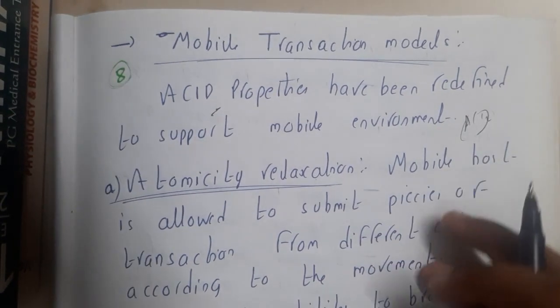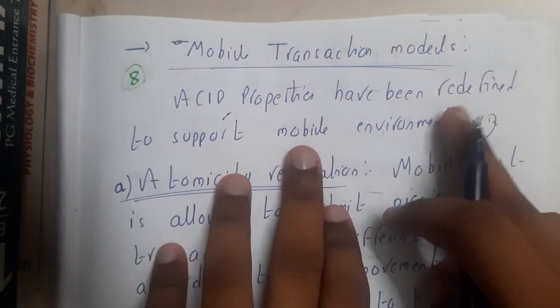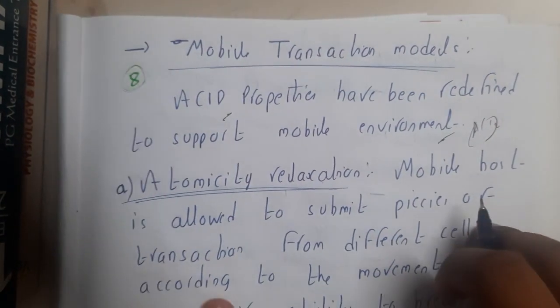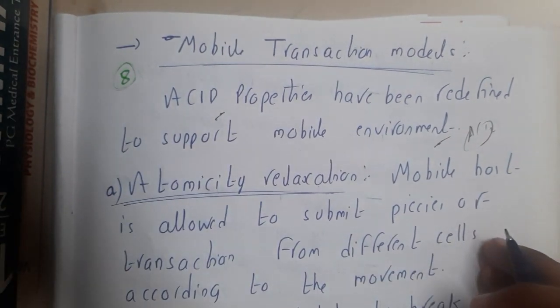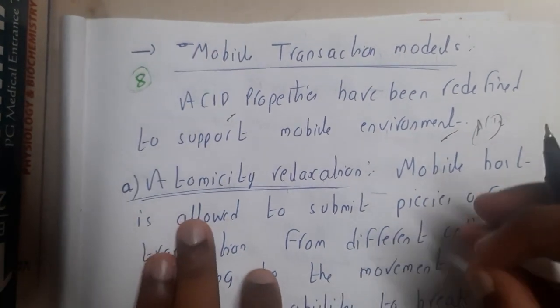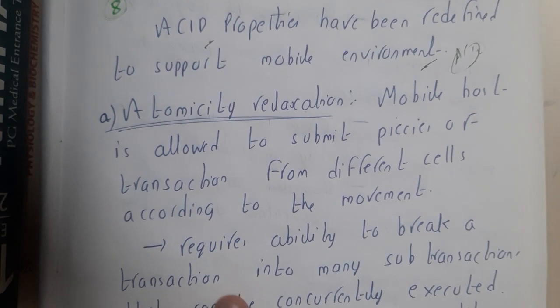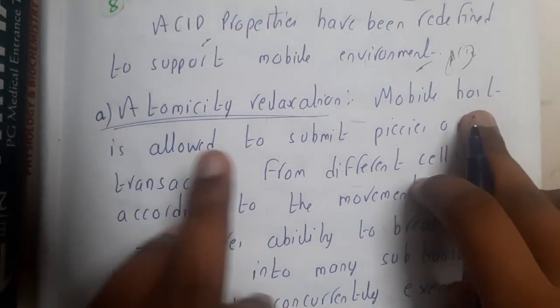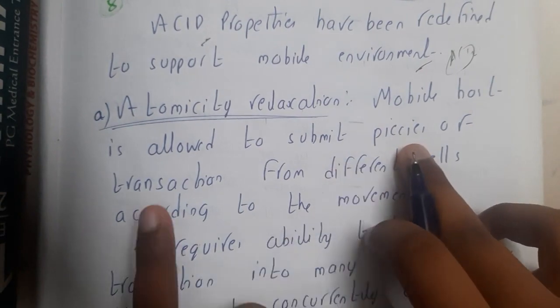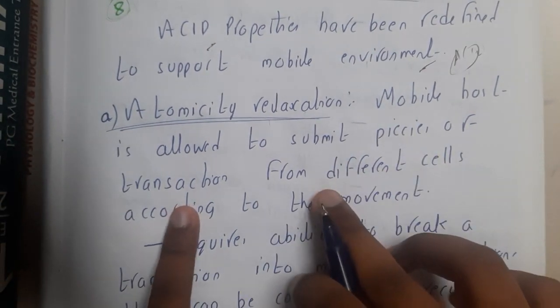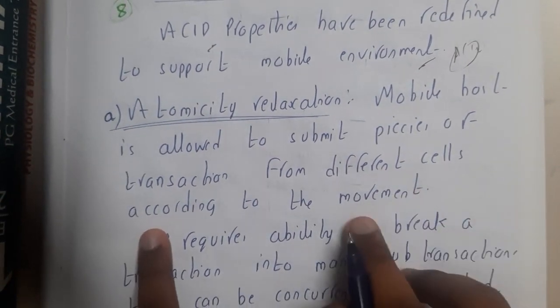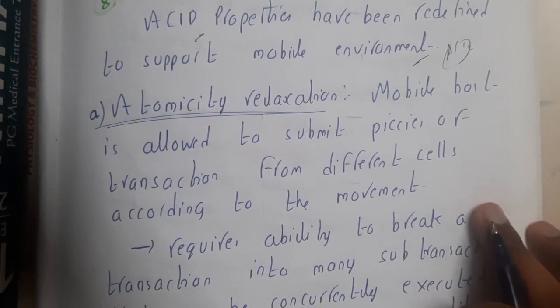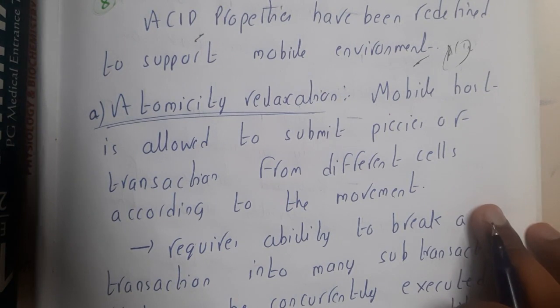ACID properties have been redefined to support mobile environment. So first, let us go to the first letter A, that is atomicity. In atomicity, we will be doing some small changes. Let us read out what are the changes. Mobile host is allowed to submit pieces of transaction from different cells according to the movement.